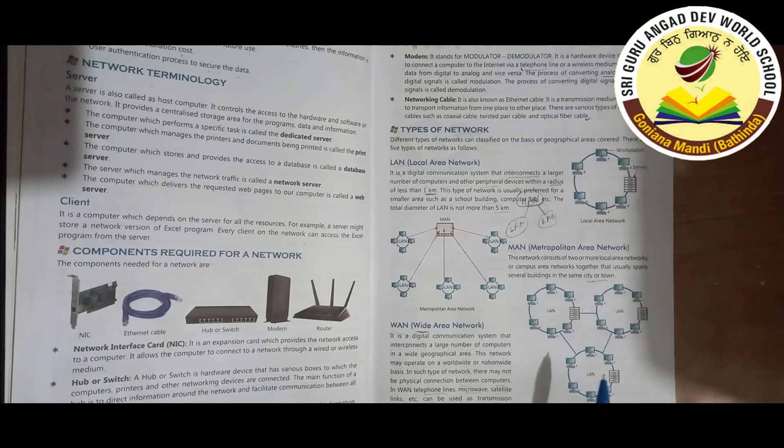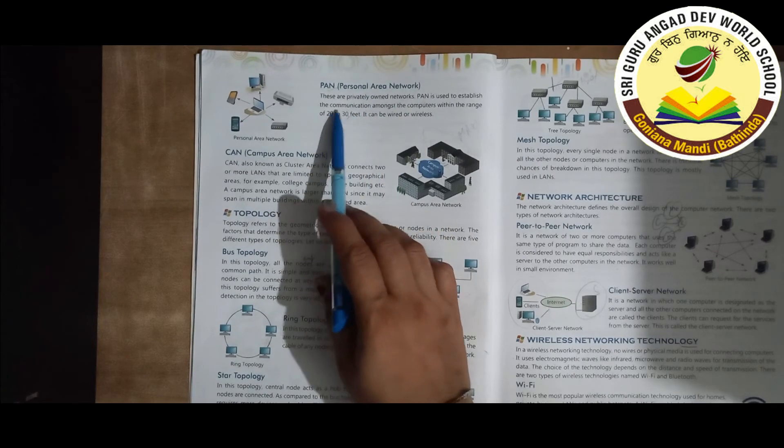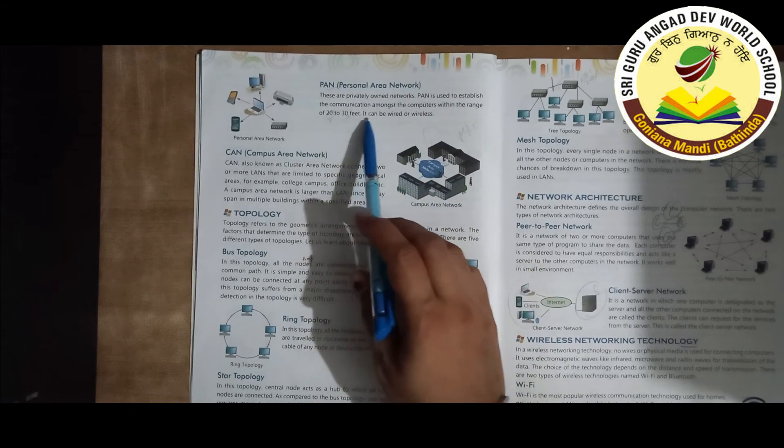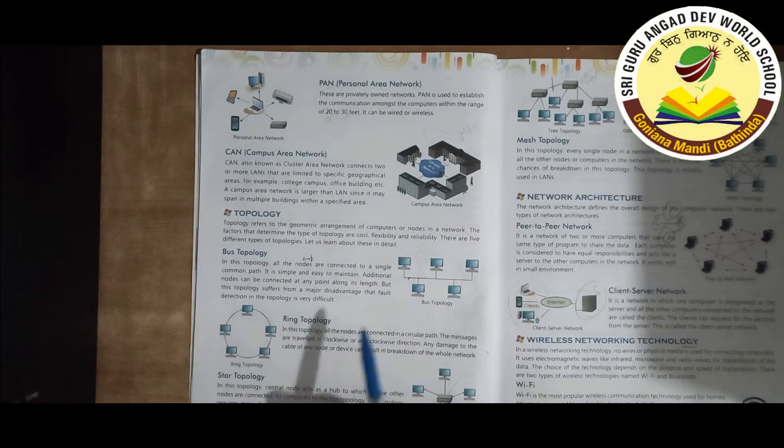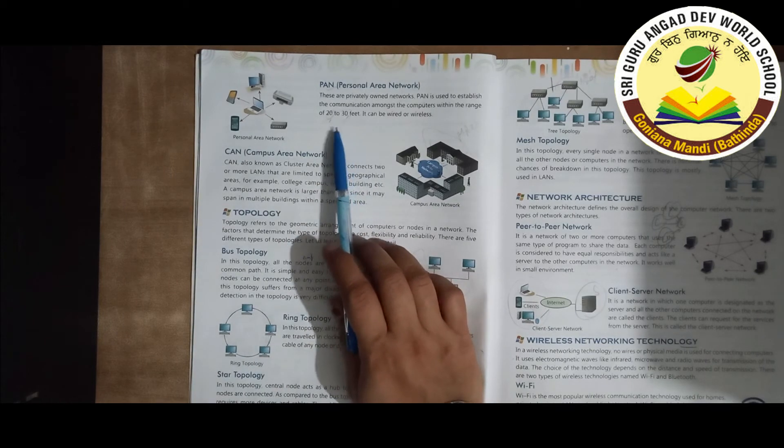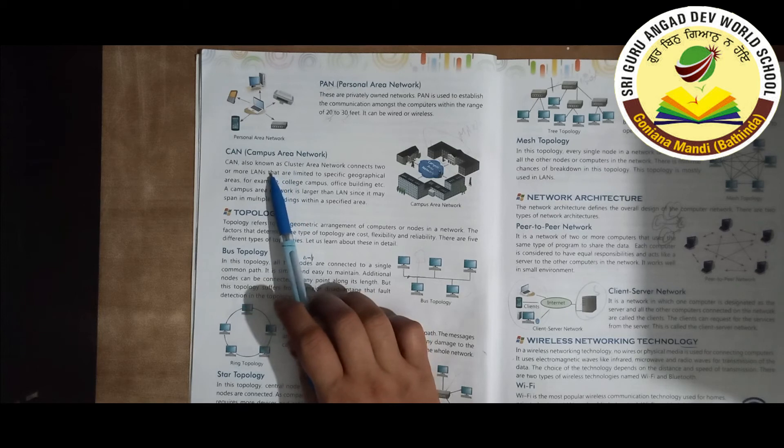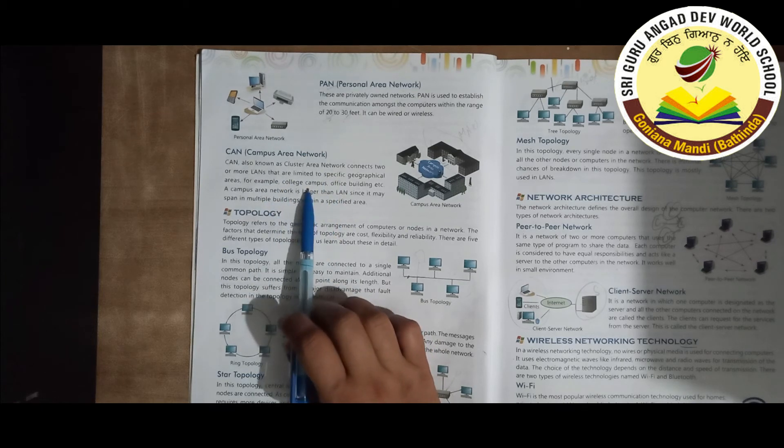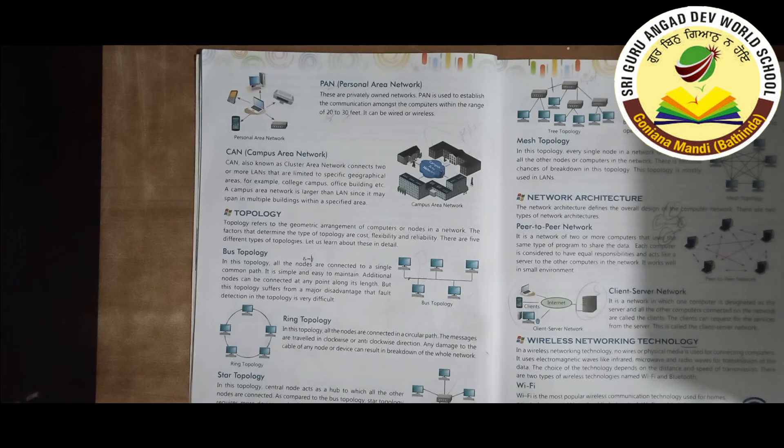PAN, Personal Area Network. This can be wired and wireless, maybe twenty to thirty feet. CAN, Campus Area Network, also known as Cluster Area Network, connects two or more LANs that are limited to specific geographical area, for example, college campus or office building.